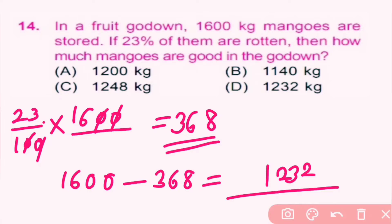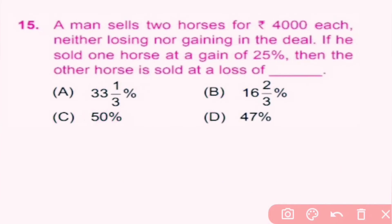Question number 15: a man sells 2 horses for Rs 4,000 each, neither losing nor gaining in the deal. If he sold one horse at a gain of 25%, then the other horse is sold at a loss of how much?